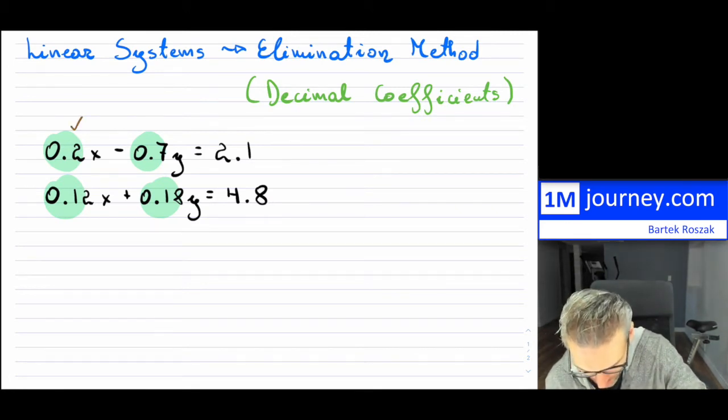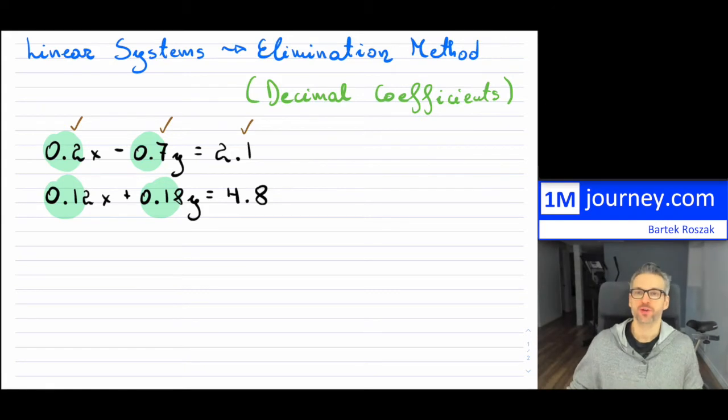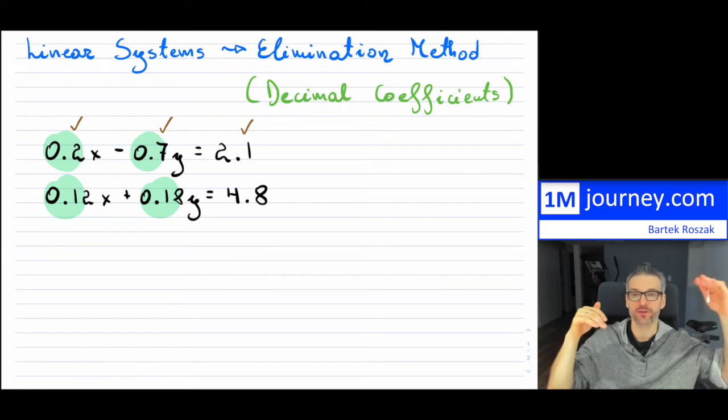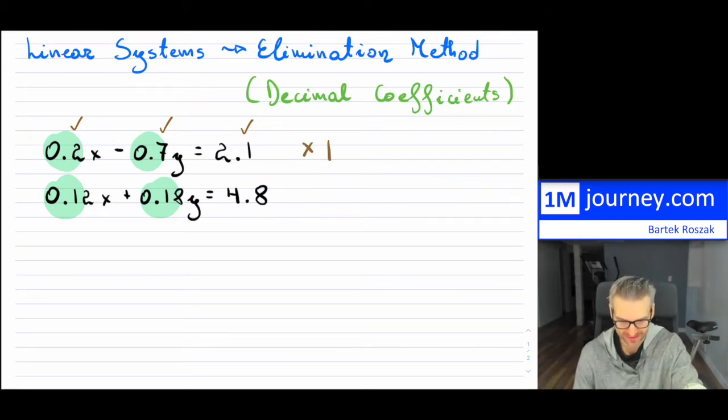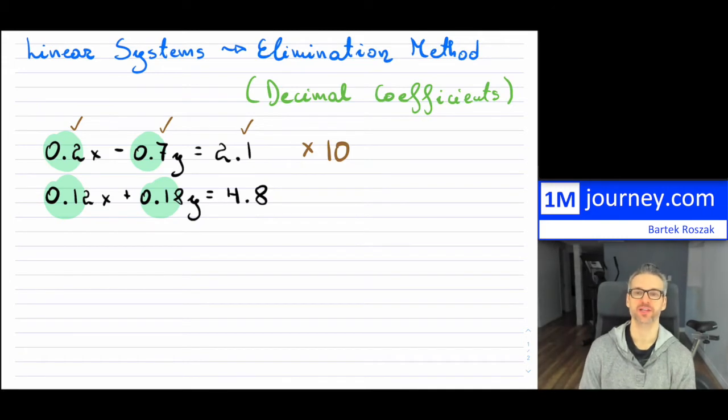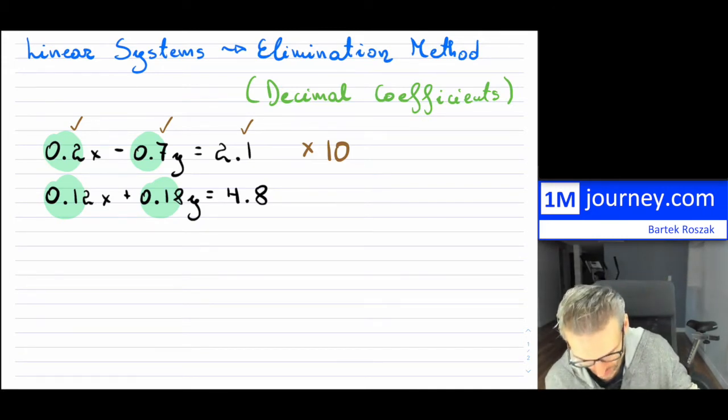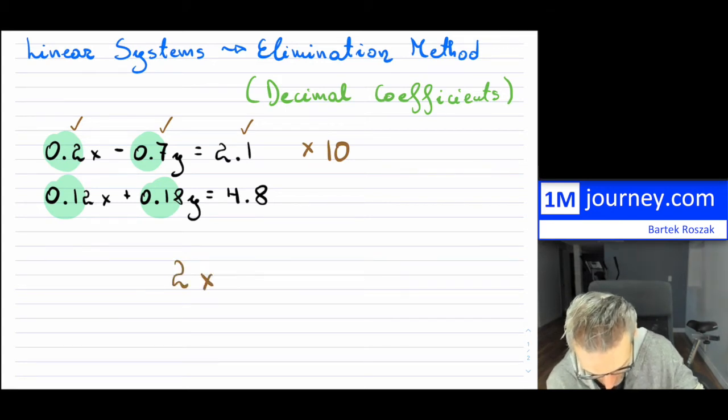So notice that in the first line what I have is I have one decimal here, one decimal and one decimal. So when you take all the coefficients and then your number, so it's most of the time it's on the right hand side, in this case it's 2.1, so whatever the number actually is, which determines your y-intercept, that particular number you see where do you have the most amount of decimals in which coefficient or the number. Well all of them in this case have just one decimal place. So if I multiply this entire line by 10 then I'm going to get rid of that decimal place. And what will happen is, so 10 times 0.2 is just 2x, then it's going to be minus 7y, and it's going to be 21, and voila, decimal is gone.